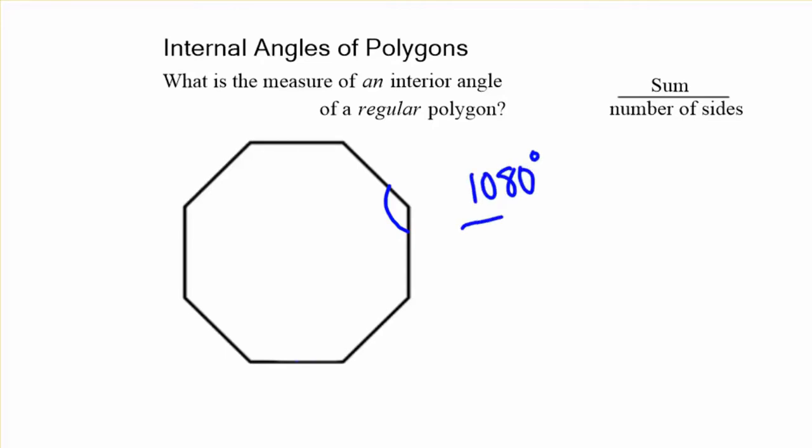So, we take that 1080 and divide by the number of sides, which is 8. And it gives us 135 degrees. Very simple. All of those interior angles are going to be 135 degrees. We substitute in our formula and that's what our formula for one interior angle is going to be.